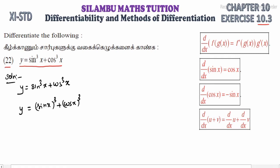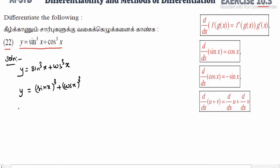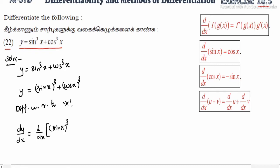Now we differentiate with respect to x. So dy/dx is equal to d/dx of (sin x)³ plus (cos x)³.